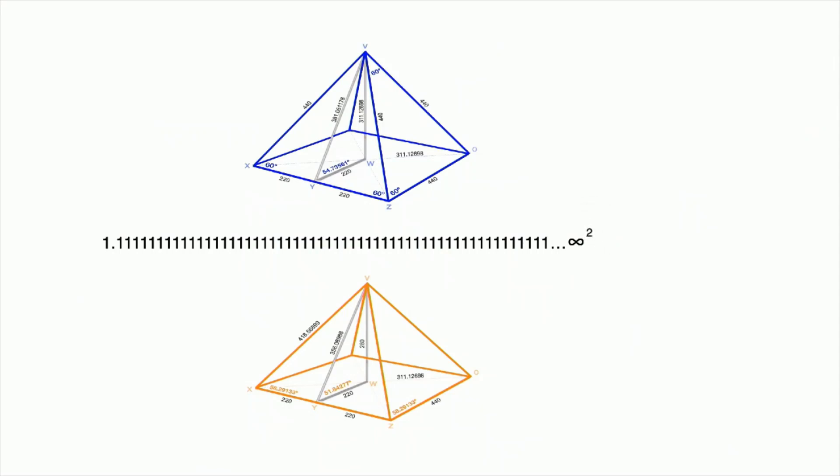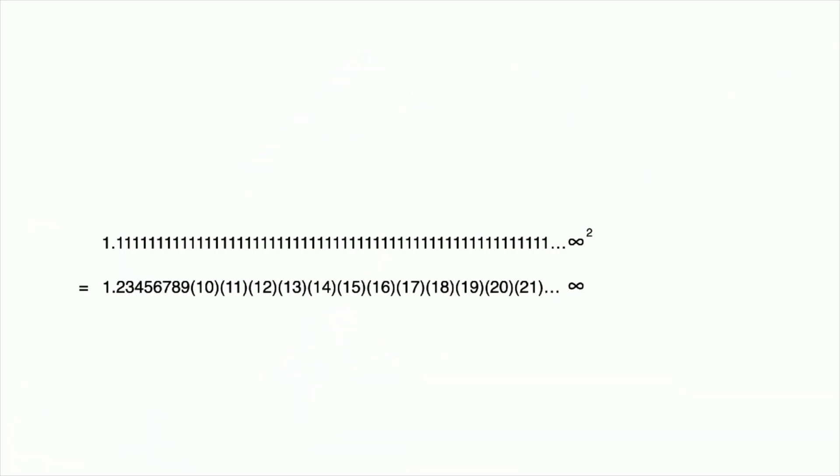This led me to this incredible thing: you've got one number that consists of only ones, and it produces when you square it a number that is every single number out to infinity that can possibly exist in any universe, because it's just integers. There's a deep spiritual message in that saying from unity comes everything.